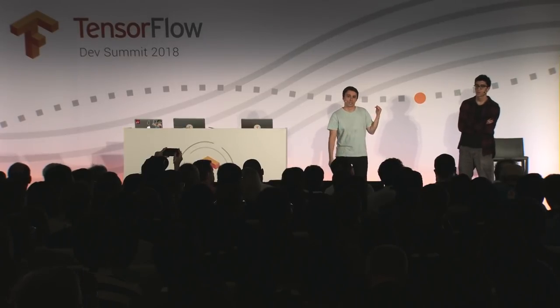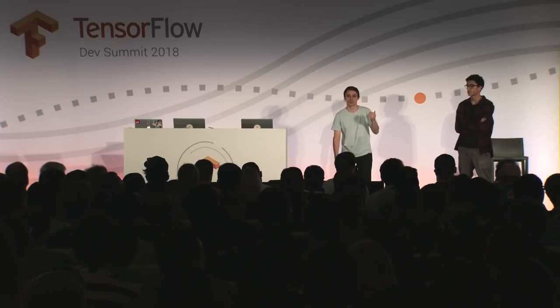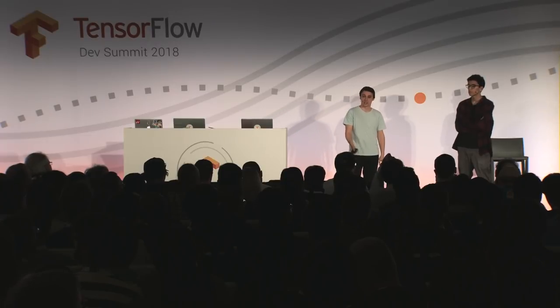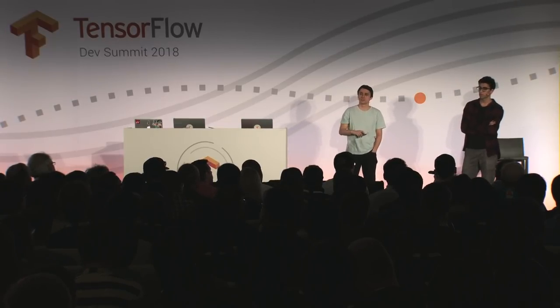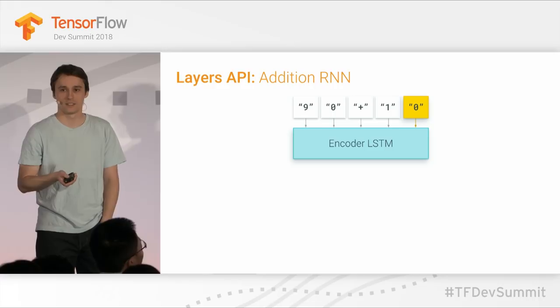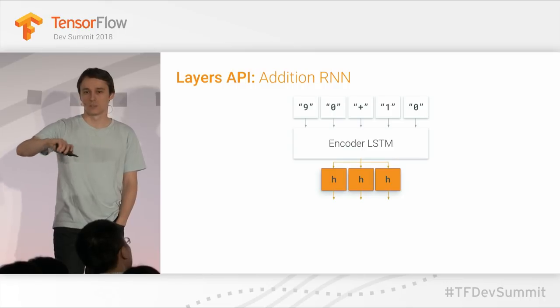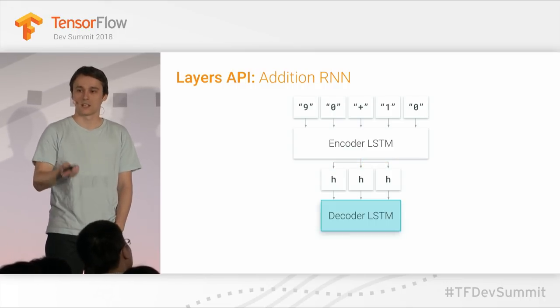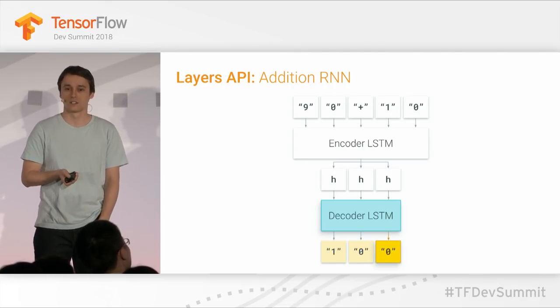Clearly, that's not how most people write machine learning, because those low-level linear algebra ops can be quite verbose. For that, we have our Layers API. To show you an example, we're going to build a recurrent neural network that learns to sum two numbers. The complicated part is that those numbers — like 90 plus 10 — are fed character by character. The neural network has to maintain an internal state with an LSTM cell; that state then gets passed into a decoder, which has to output 100 character by character. So it's a sequence-to-sequence model.